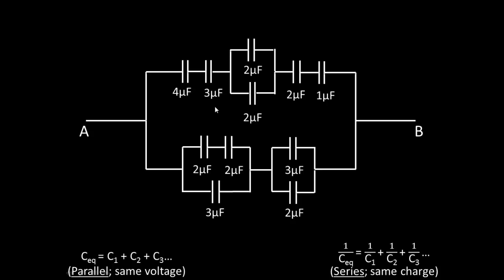I've gone ahead and replaced the capacitors we saw earlier in the circuit with numerical values. There's four microfarads, three microfarads, two microfarads, two microfarads, two microfarads, and one microfarad in the top branch. Then in the bottom branch, there's two microfarads, two microfarads, three microfarads, three microfarads, and two microfarads. The rules for capacitors in parallel and in series are in the bottom left and right-hand corners, so you can follow along.